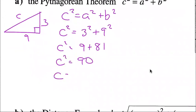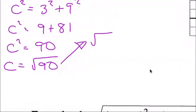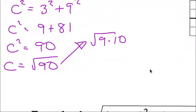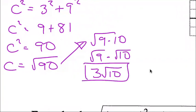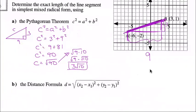So c equals the square root of 90. If asked for an exact value, I simplify the radical rather than finding the decimal. The square root of 90 is the square root of 9 times 10, which equals the square root of 9 times the square root of 10, which equals 3 square root 10. That's your exact value measurement of the hypotenuse — and that's what you'll use later in the trig unit.